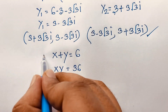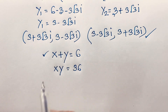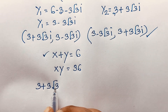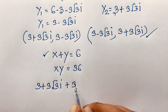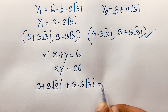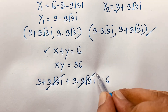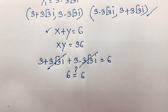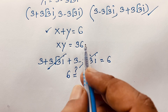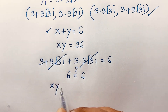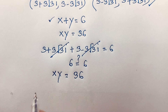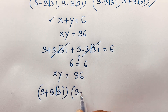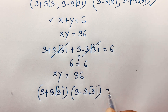For the first equation, x plus y equals (3 plus 3√3 i) plus (3 minus 3√3 i). The imaginary parts cancel out, and 3 plus 3 equals 6, so left-hand side equals right-hand side. Therefore x plus y equals 6 is verified.